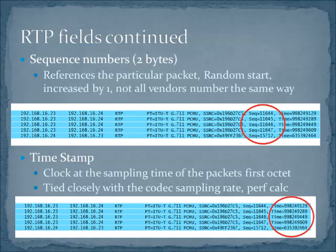Moving on a little bit into the header, RTP is concerned with sequence numbers. We're worried about this for replay attacks and things like that. In this particular example, we can see the sequence number doesn't start at zero or one — it starts at some random value and then increments one by one. Not all vendors will do that the same way; we've got Polycom captures that show Polycom does start at one.